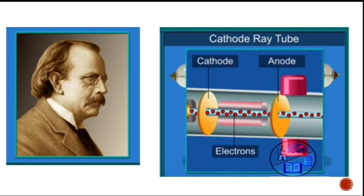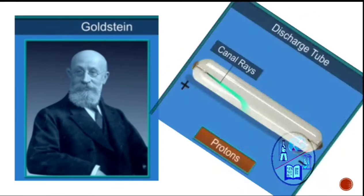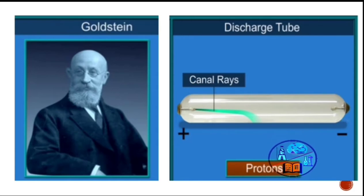Electrons have negligible mass and charge of minus 1.602 into 10 to the power minus 19 coulomb. And then Goldstein came upon positively charged radiations in a gas discharge which he termed as canal rays. These radiations led to the discovery of protons. Mass of proton was found to be much more than the electrons and carried positive charge of plus 1.602 into 10 to the power minus 19 coulomb.